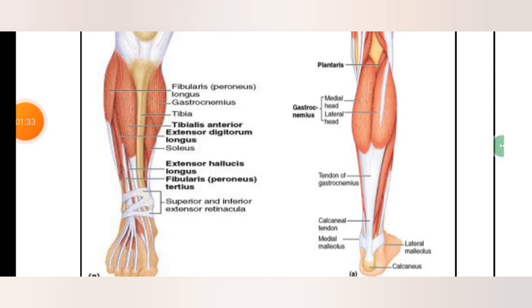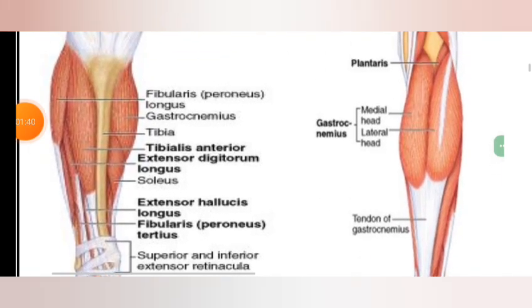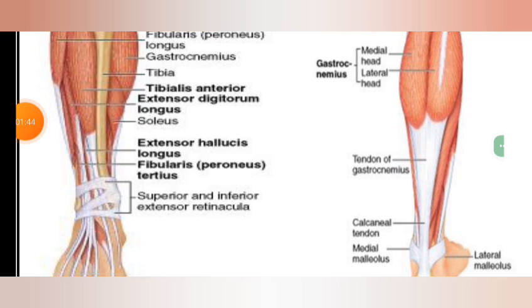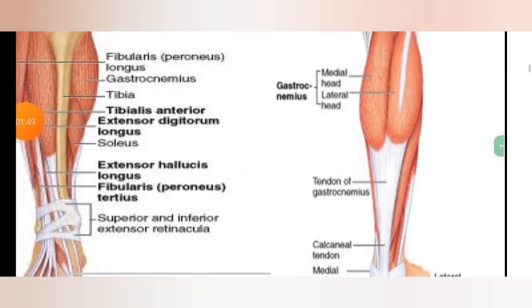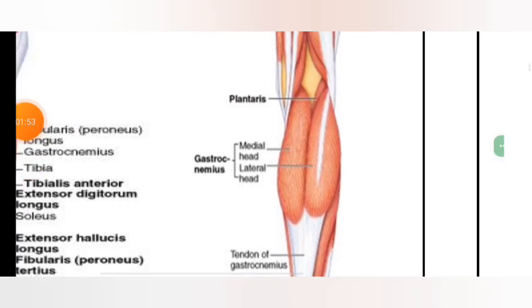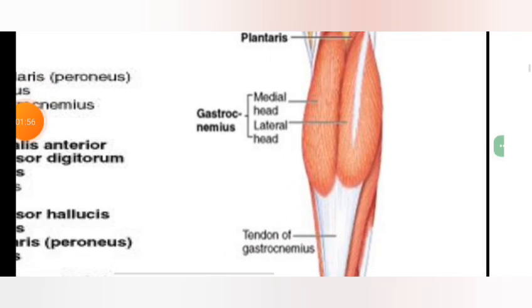Anterior compartment muscles: tibialis anterior, extensor digitorum longus, extensor hallucis longus, and fibularis tertius. This is the posterior compartment muscles: plantaris and gastrocnemius, which has a medial head and a lateral head.